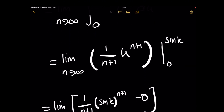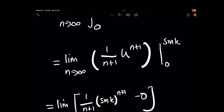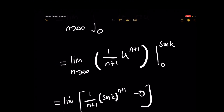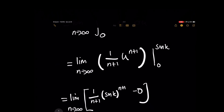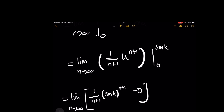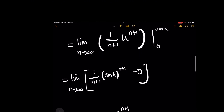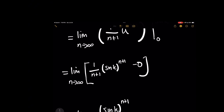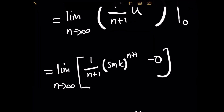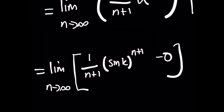To evaluate this, take the upper limit of integration, sine of k, plug it in for u, and subtract the result of plugging in the lower limit of integration, which is 0. I put brackets here to make sure the order of operations is correct, so we'll have sine of k being plugged in for u.